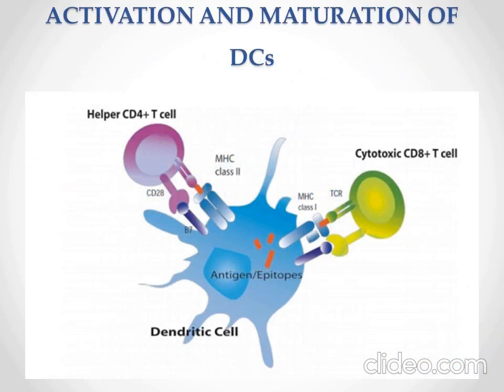Dendritic cells (DCs) are the most efficient and professional antigen-presenting cells of the immune system. Activation of dendritic cells is essential for induction of adaptive immune responses. Many adjuvant particles are needed to induce dendritic cell maturation to enhance adaptive immunity — such as lipopolysaccharide, liposomes, CpG-ODN, MF59, and AS04.